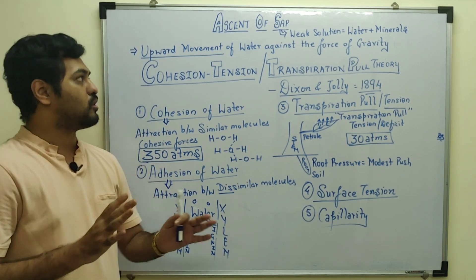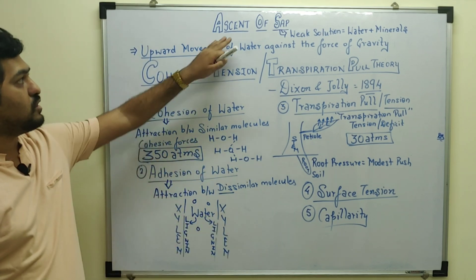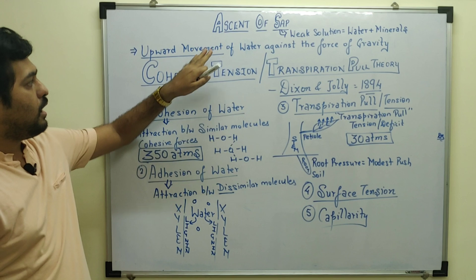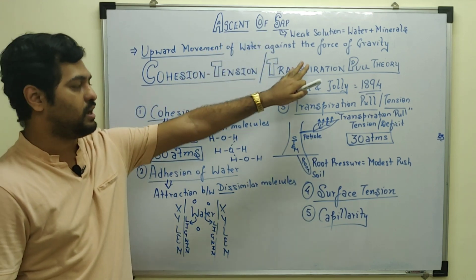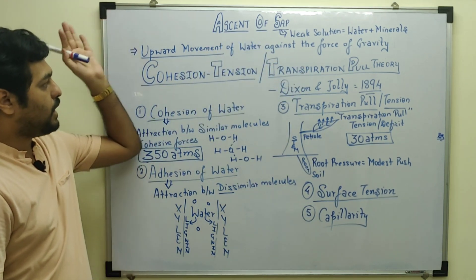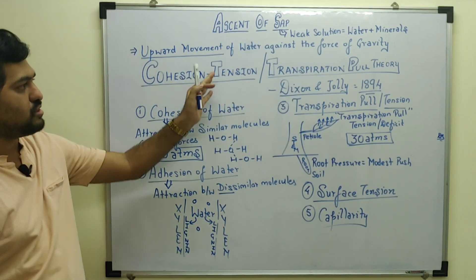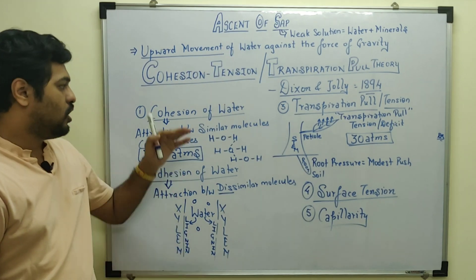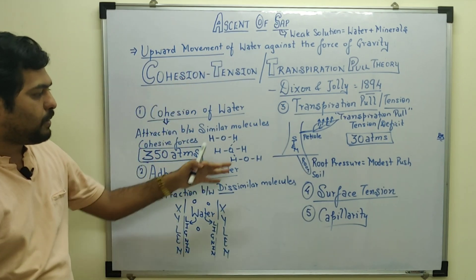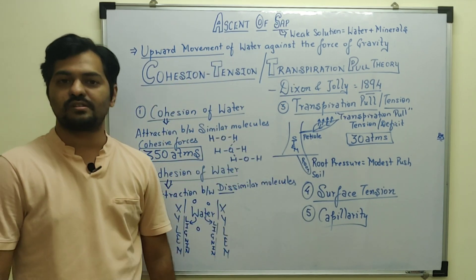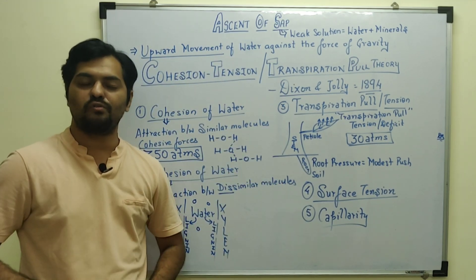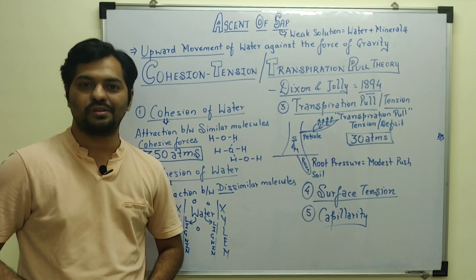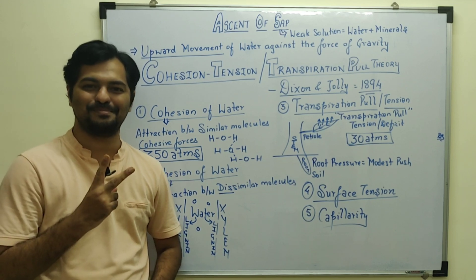So today's learning objective has been achieved — we have discussed the ascent of sap, the upward movement of water against the force of gravity, explained by the cohesion tension theory (also known as the transpiration pull theory), covering its five major features. Stay tuned for further videos. That's all from Dipenism. Thank you.